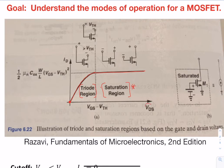This is where as VDS changes, my ID, which is this side of the graph, my ID will stay the same.